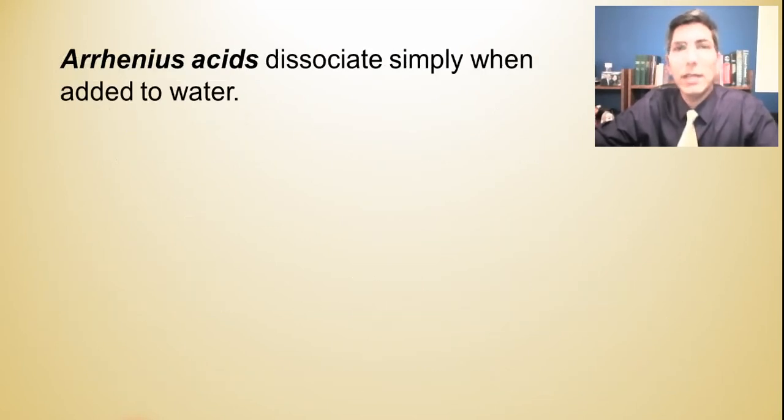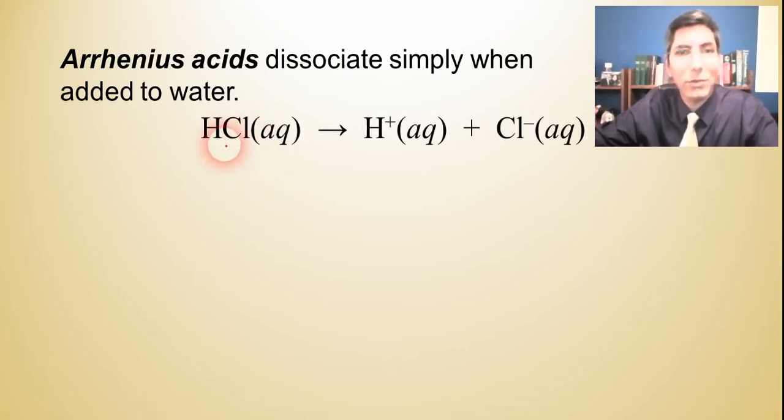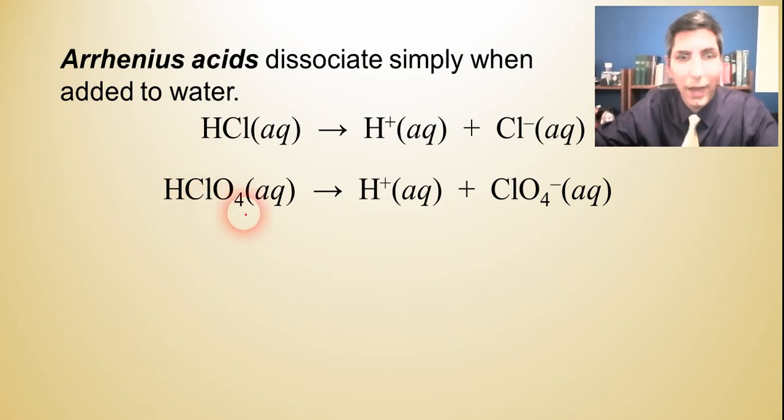Now, when you take an Arrhenius acid and it's dissolved into water solution, it dissociates very simply into its component ions. So for example, in the case of hydrochloric acid HCl, if you take that, you'll find that it dissociates into hydrogen ions and into chloride ions. And it's a one to one ratio, as you can see from the formula and the stoichiometry there. If we take perchloric acid HClO4 and we allow that to dissociate into water, we have the same thing. We have the hydrogen ions and we have the perchlorate ions that are produced. This is what happens when you dissociate Arrhenius acids. And we'll talk about this a bit later, about how some acids dissociate all the way and some don't. That's what's going to be in our next video.